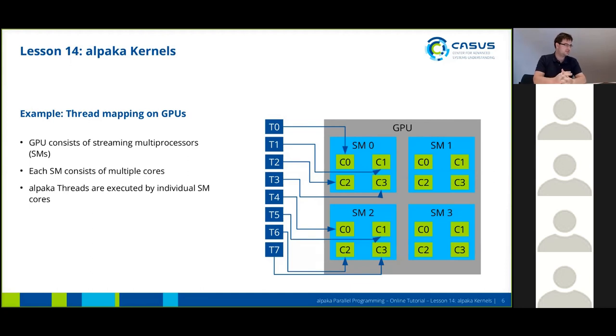On a GPU the layout is a bit different. A GPU consists of multiple streaming multiprocessors or SM. And each SM itself consists of multiple cores again. And alpaca threads are executed by the individual SM cores, not the SM itself.